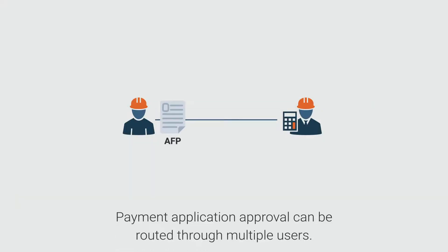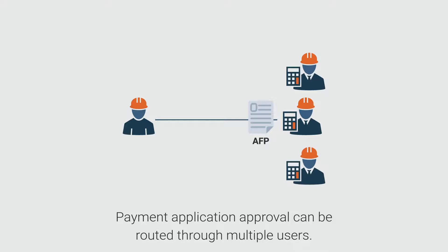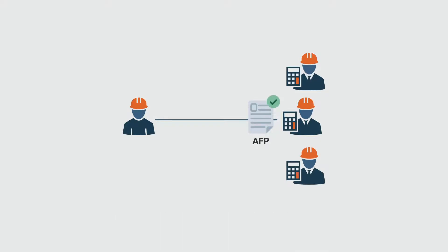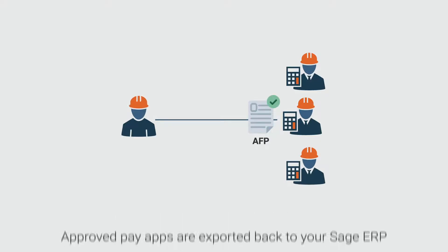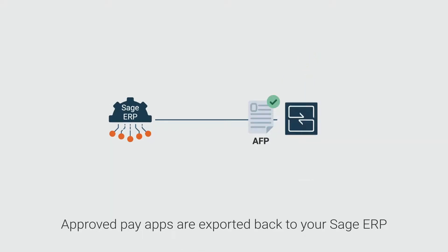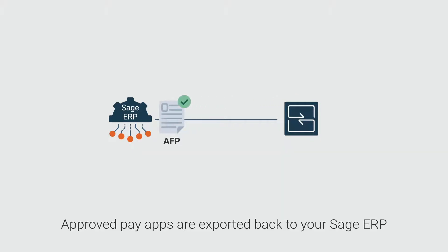Approval of payment applications can be handled by a single user or routed through any number of approvers to meet your internal processes. Approved payment applications are exported back to your ERP where they adjust the associated subcontract.